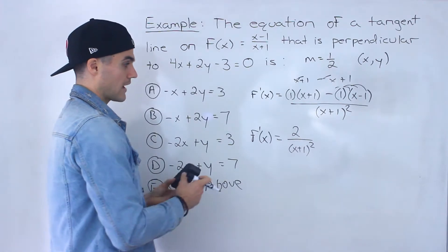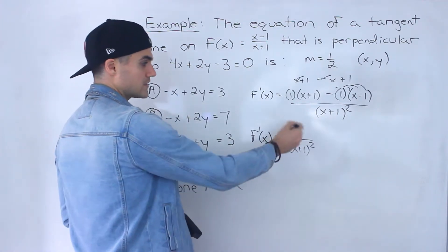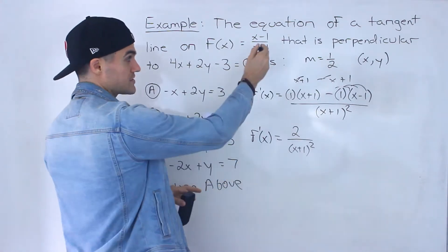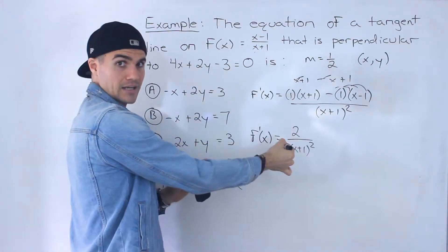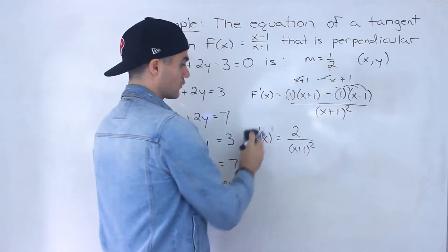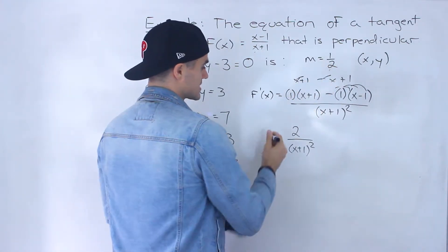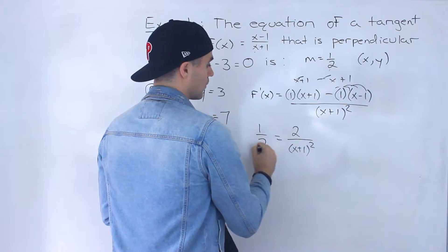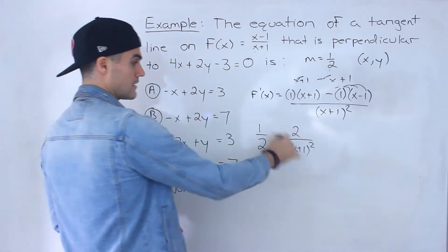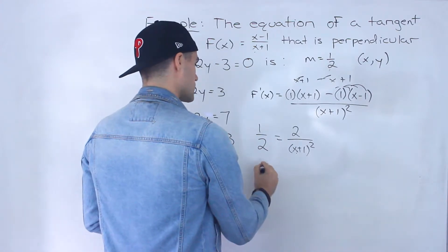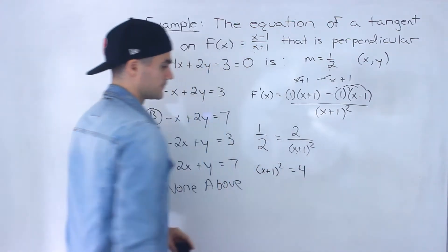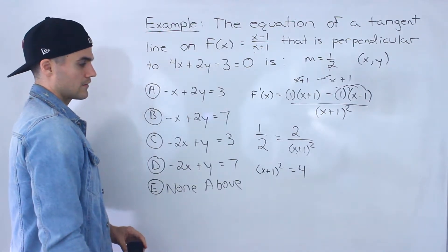The derivative gives us the slope of a tangent at any x value. We already know the slope of the tangent is 1 over 2, so we set the derivative equal to 1 over 2 and solve. Cross-multiplying gives us (x plus 1) squared equals 4.